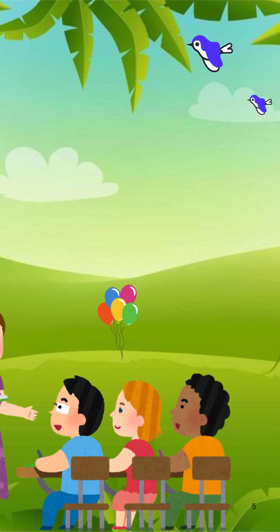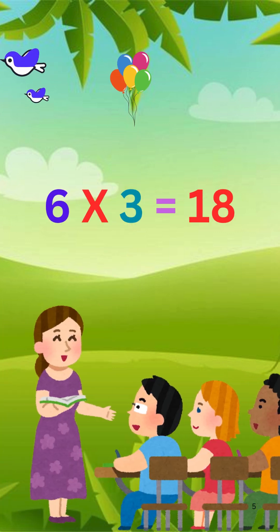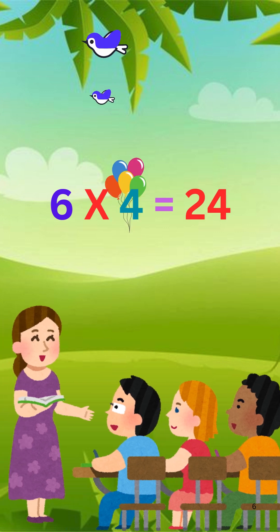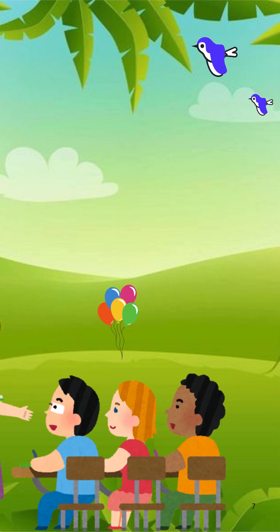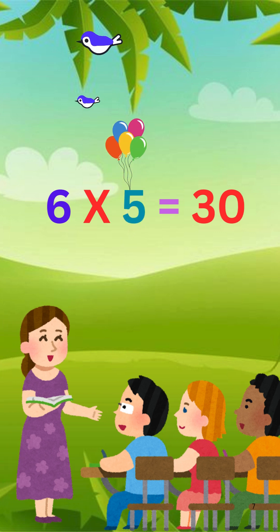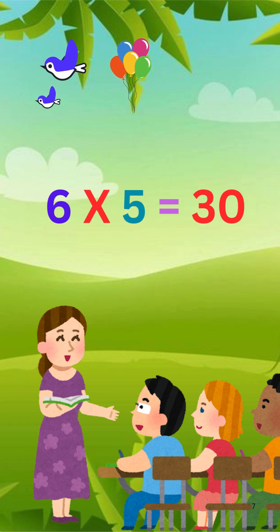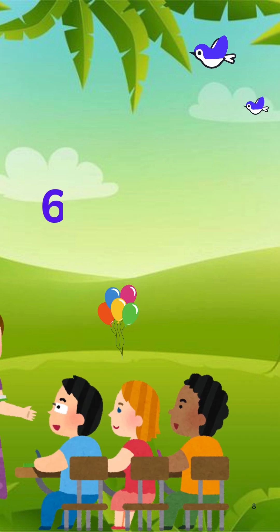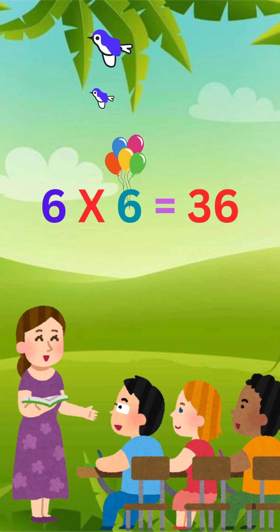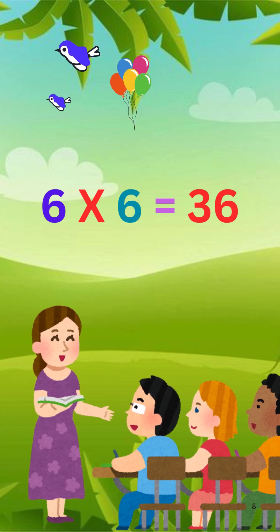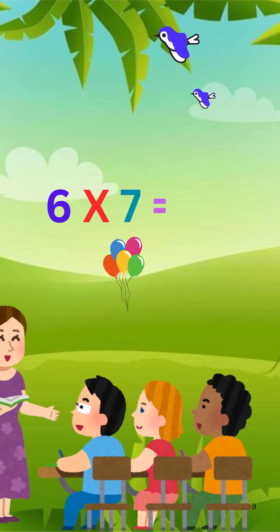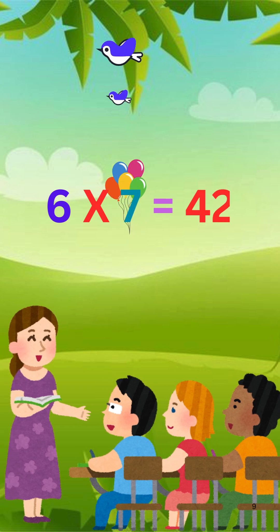6 x 3 is 18. 6 x 4 is 24. 6 times 5 is 30. 6 times 6 is 36. 6 times 7 is 42.